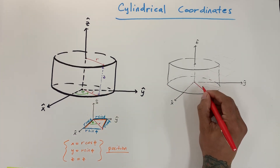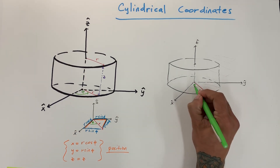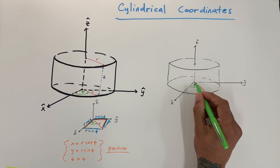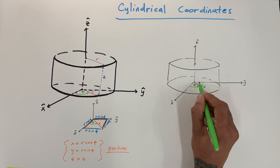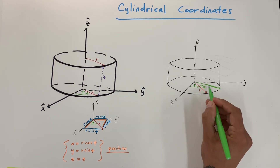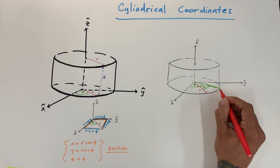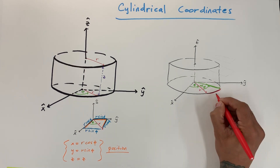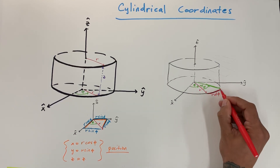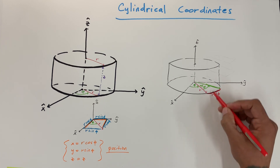Now let's draw our differential volume. We have a distance out of R radius, just like before. Here we have Phi which exists in the XY plane, and if we move another distance dΦ, that gives us this arc length here, which is R dΦ — the radius times the angle.